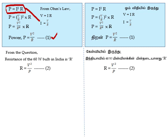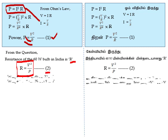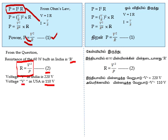From the question, the resistance of the 60-watt bulb in India is R. From expression 1, rearranging gives R = V²/P — I have taken this as equation 2. From the question, the voltage in India is 220 volts and in USA is 110 volts. I have taken the voltage in India as V and the voltage in USA as V dash.